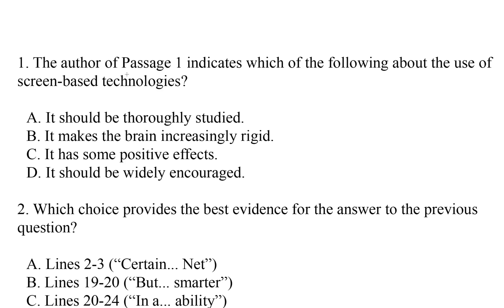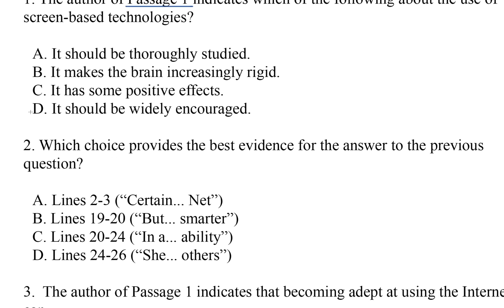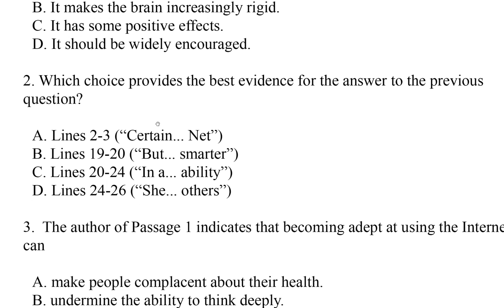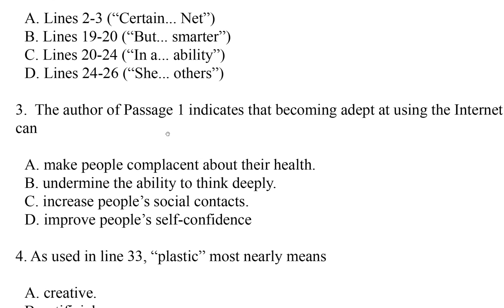Question one: 'The author of passage one...' — okay, so this is a passage one question. It's as quick as that. Question two refers back to the previous question: 'Which choice provides the best evidence for the answer to the previous question?' So this is also a passage one question. We'll do these first.